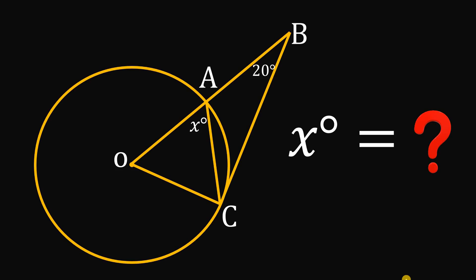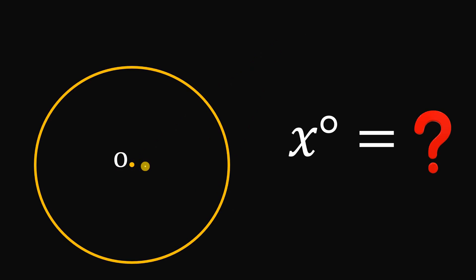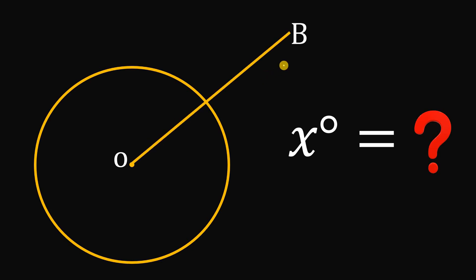Can you solve this geometry challenge? Here's the question. Let's have circle O, and let's have point B outside circle O. Let's connect O and B, so we have segment OB. The intersection of segment OB with circle O, let's call this point A.